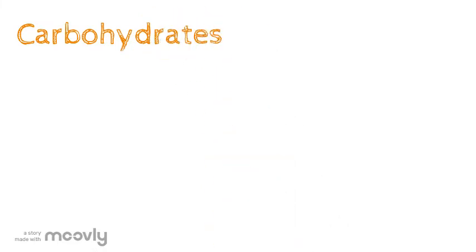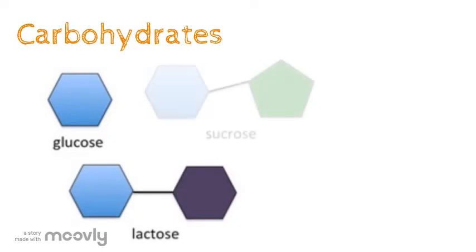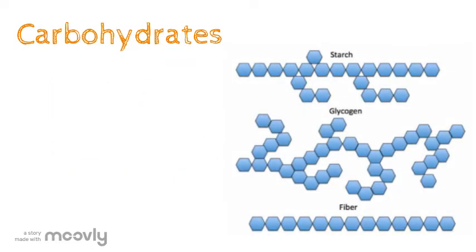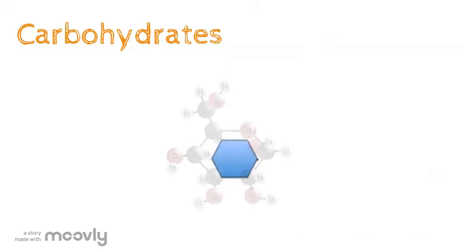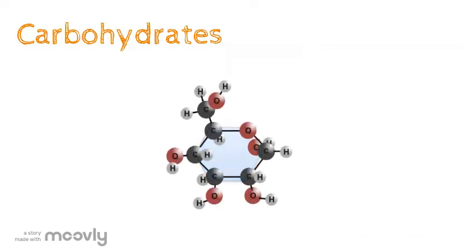Carbohydrates include molecules like simple sugars—glucose, lactose, and sucrose—as well as complex molecules such as starches and cellulose. Carbohydrates are made out of carbon, hydrogen, and oxygen atoms.